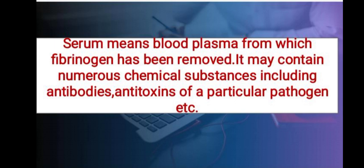For preparing serum, a small dose of bacterial toxin is introduced into the body of a healthy animal such as a horse or a cow. The body produces antitoxins to neutralize the effect of the toxin. After several injections of the same toxin, the blood of such an animal is taken out, and on chilling it gives a clear liquid.